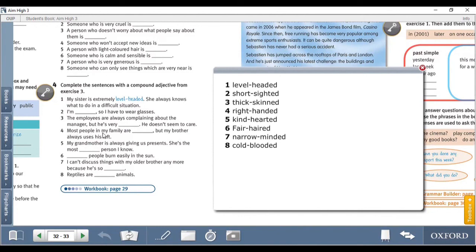Number four, most people in my family are right-handed but my brother always uses his left. Number five, my grandmother is always giving us presents, she is the most kind-hearted person I know. Number six, fair-haired people burn easily in the sun. Number seven, I can't discuss things with my older brother anymore because he is so narrow-minded. Number eight, reptiles are cold-blooded. That's it for this page, I hope you've benefited from these exercises. Thank you.